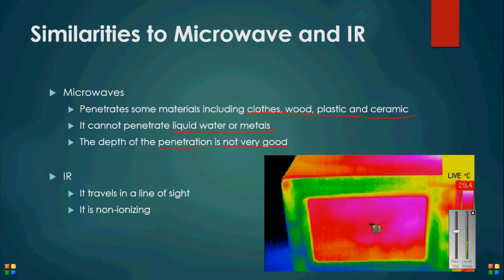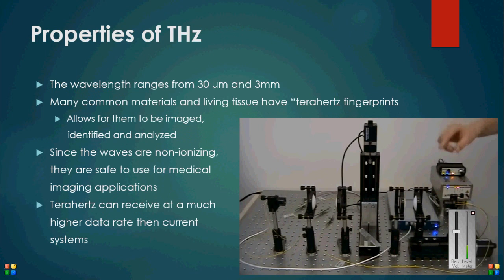Here are some properties of terahertz radiation. Many materials and substances possess what is referred to as a unique terahertz fingerprint. That is to say, when looking at the spectroscopy of an object under terahertz radiation, we detect radiation that is unique to that material or substance. Because of the non-ionizing characteristics of terahertz radiation, it can be used safely in medical imaging applications. The radiation is not harmful to body tissue or DNA.